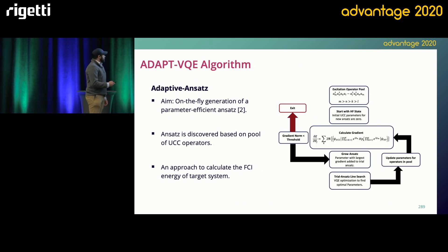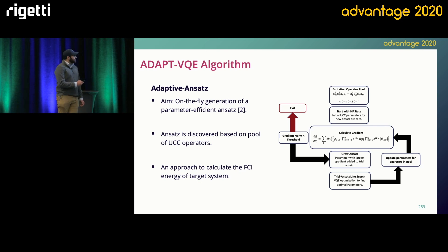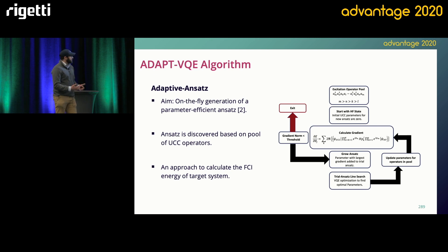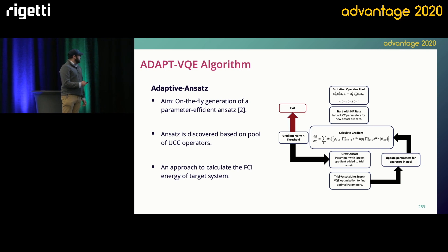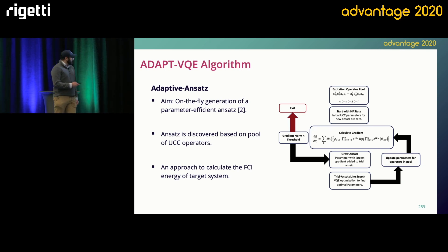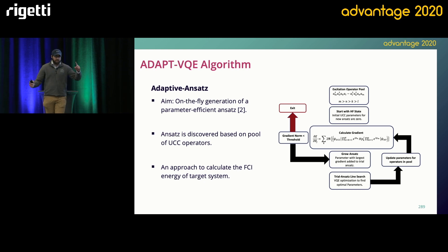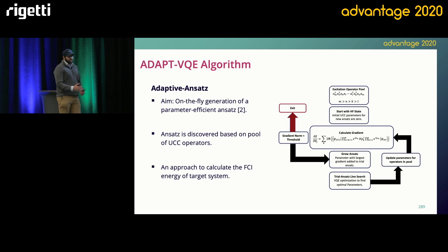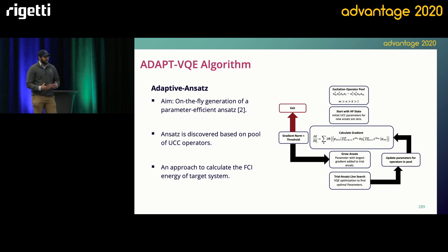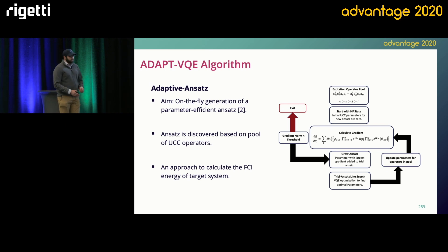In the Adapt algorithm, you start with an excitation pool containing UCC operators, and assign a variationally independent parameter to each UCC excitation operator. The parameter starts at zero, signifying we're starting with the Hartree-Fock state. We then calculate the gradient of the Hamiltonian with respect to this Hartree-Fock state for each parameter. We look at the largest gradient — the excitation operator corresponding to this gradient is then added to our ansatz. We then perform a VQE experiment, optimizing the energy and parameters. We update the parameters for the pool and recalculate the gradient. If the gradient norm is very close to zero, the adapt iteration is terminated; if not, we continue the procedure.